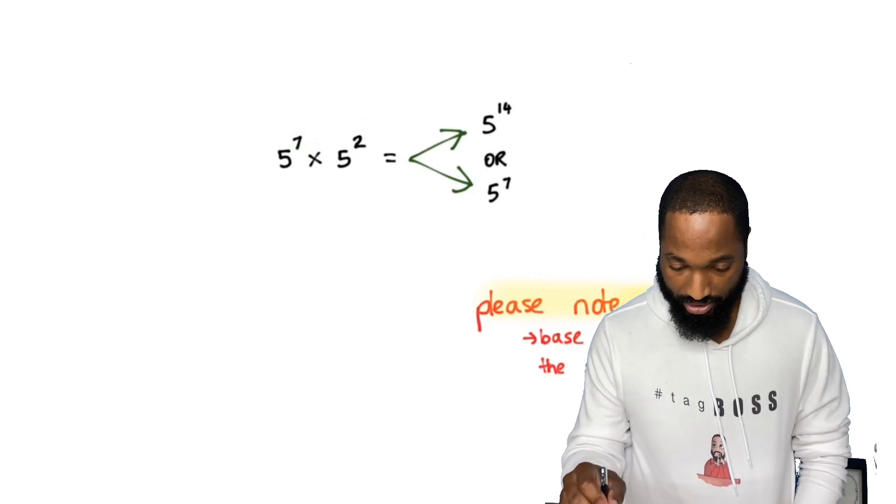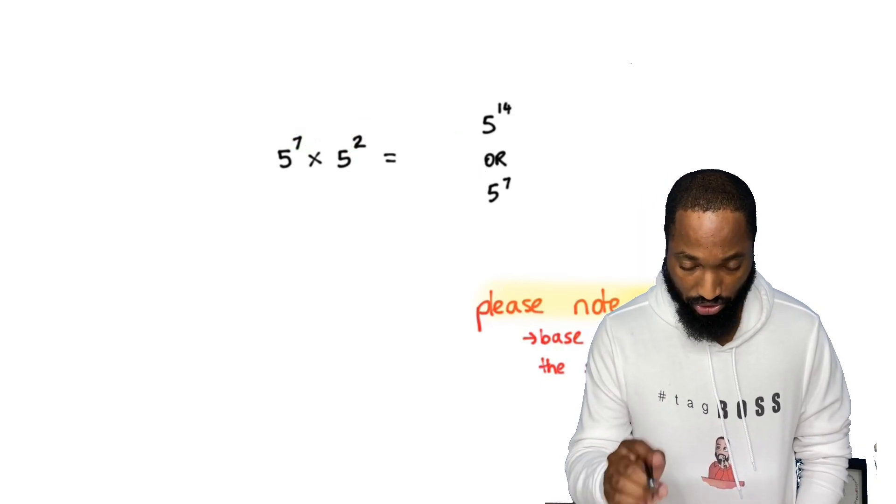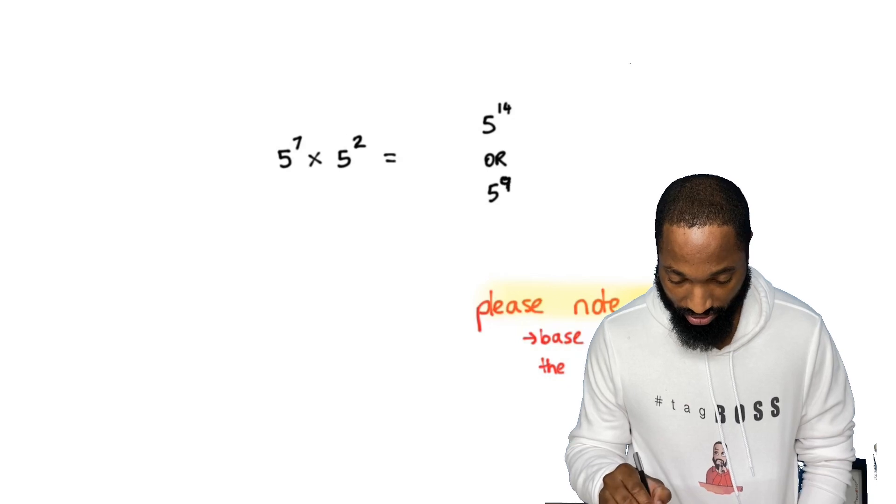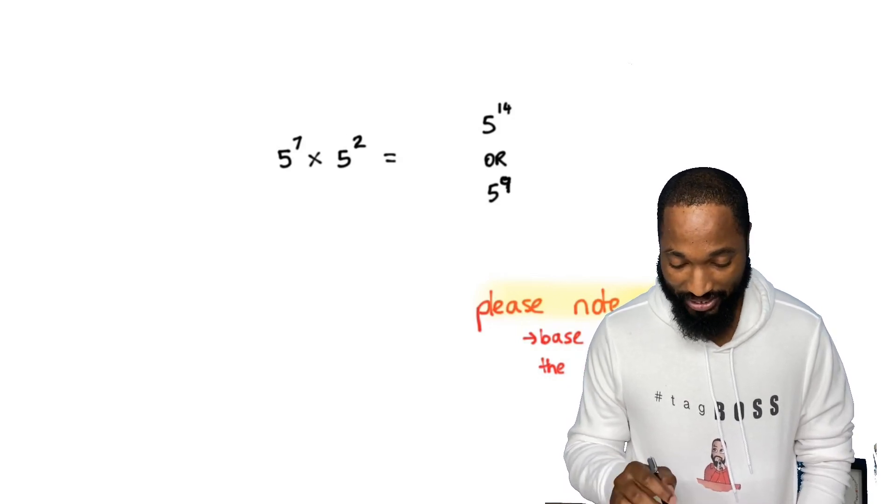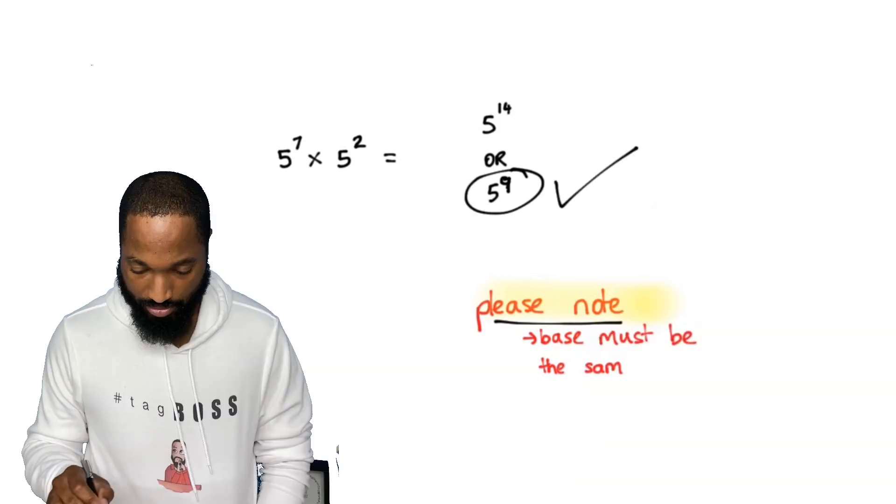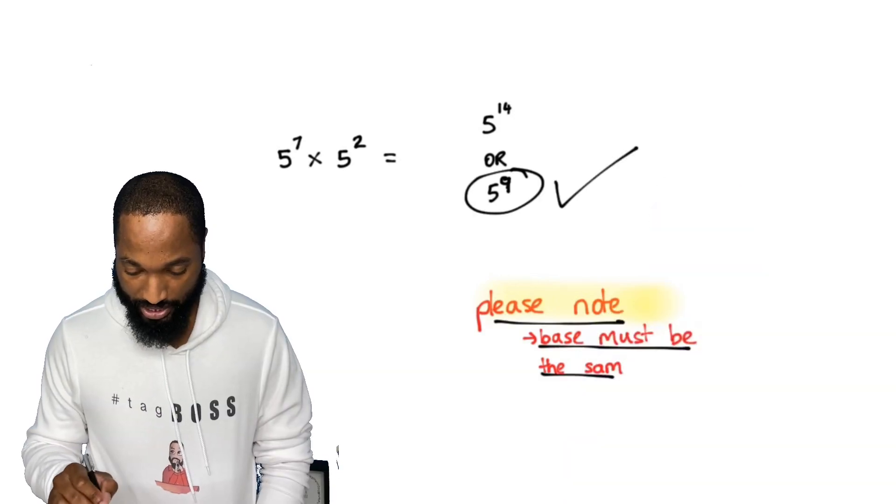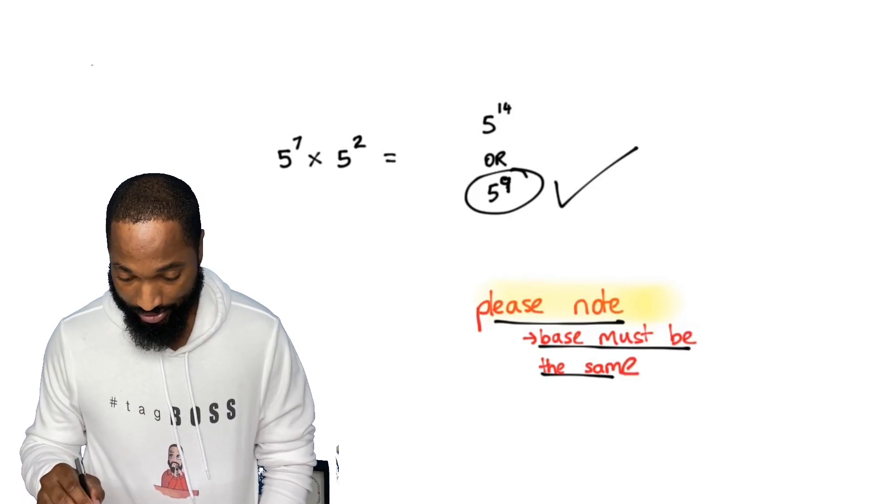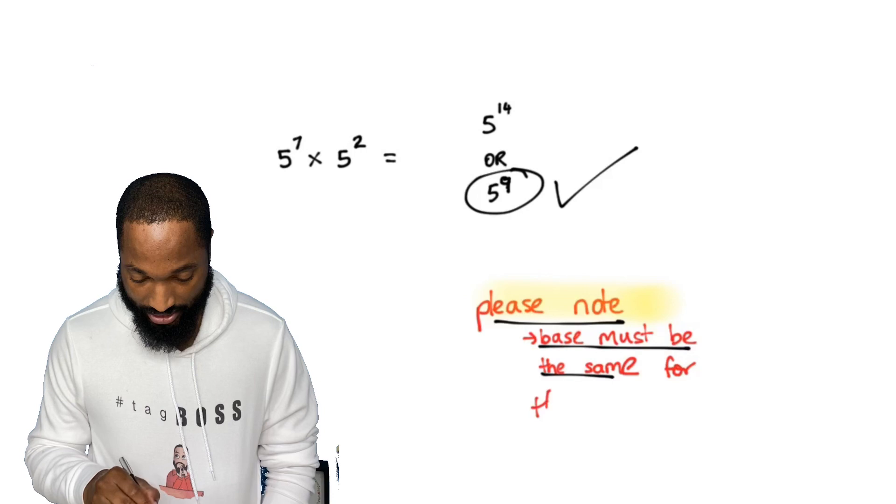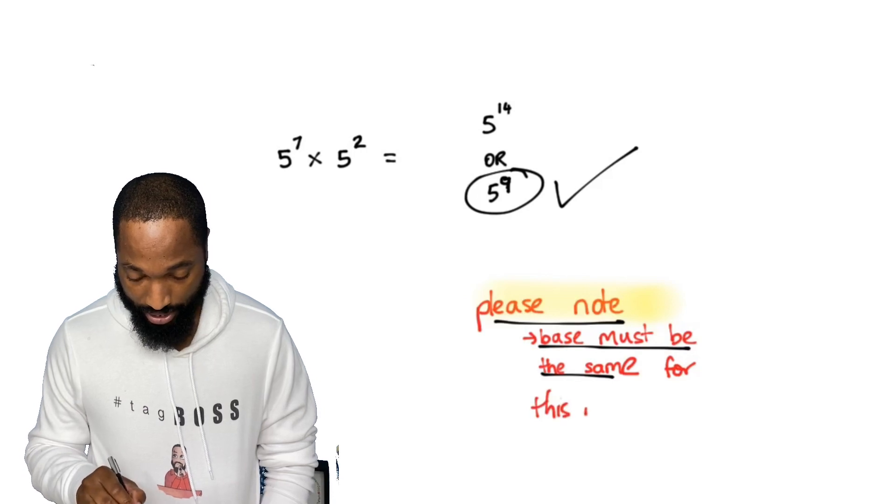It's not going to multiply and give you 14, it's going to add and give you nine. So this is the correct answer. Please note this must be the same for this magic trick.